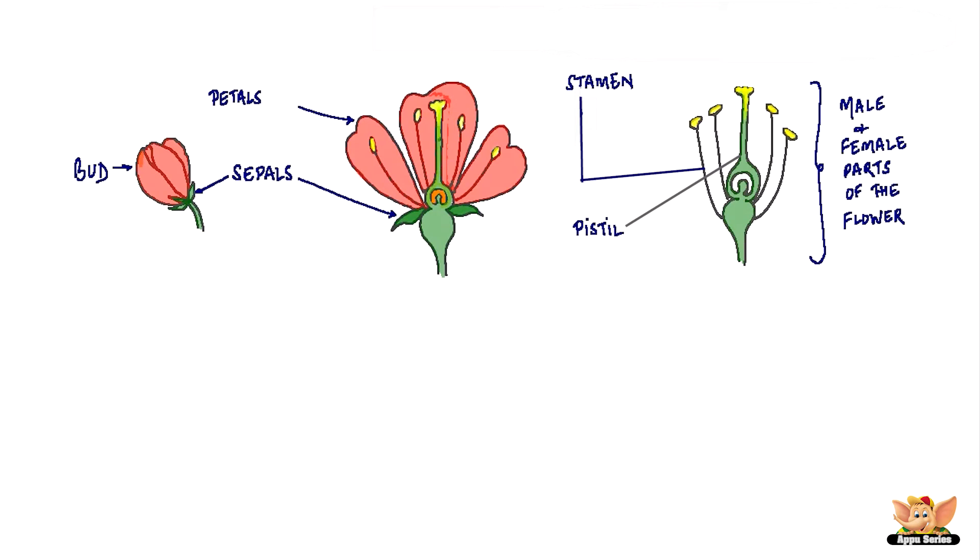The stamen is further divided into anther and filament. The anther contains a yellow, powdery substance called pollen.